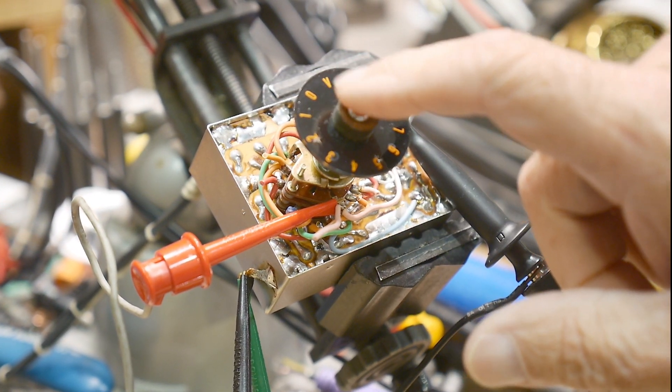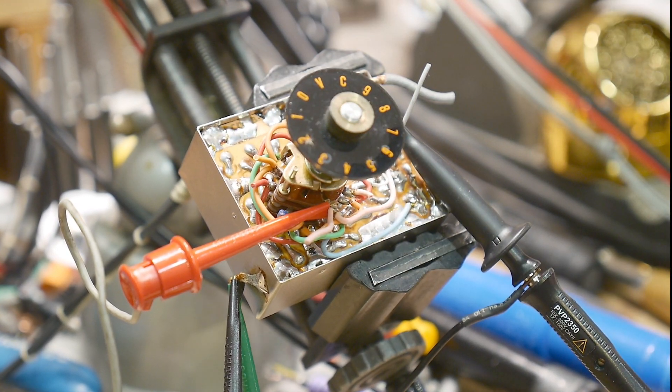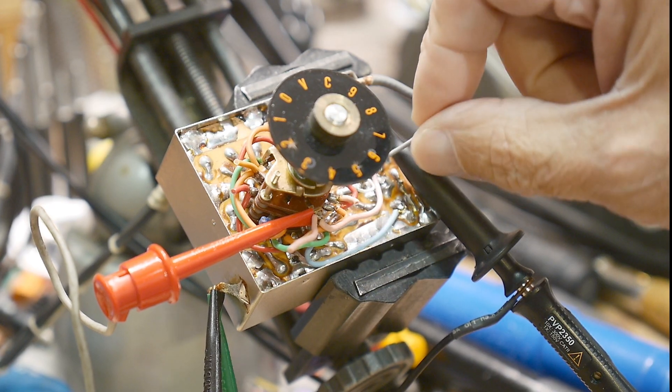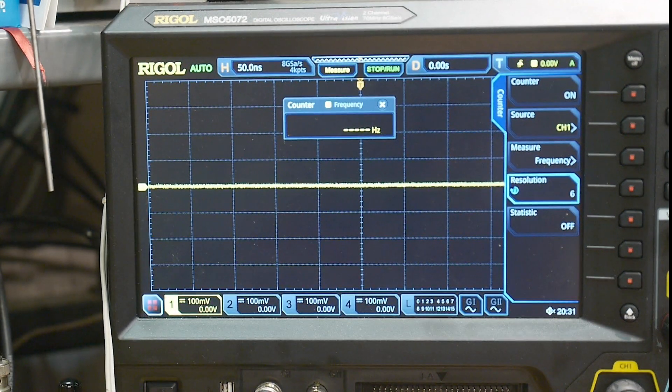And we're going to start at V, and V says pass through the VFO. So that comes in on this wire here, and there's nothing attached. So, if we go to the oscilloscope, we see that there is nothing, nothing there.